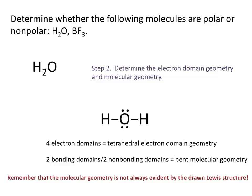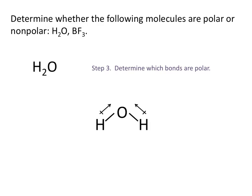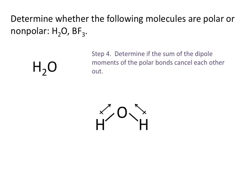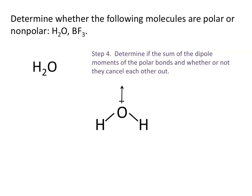Remember that molecules are three-dimensional, and so sometimes it's hard to draw Lewis structures in three dimensions on paper. Next, we need to determine which of these bonds are polar. Both of the oxygen-hydrogen bonds in this water molecule are polar. Lastly, we need to determine if the sum of the dipole moments of the polar bonds cancel each other out. Remember that dipole moments are vectors, and if you remember how to add vectors, we line them up head to tail.